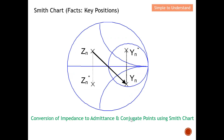Let's look at an impedance value — how can I obtain the admittance value? What I need to do is draw a line that crosses the point of origin (the matched point, which is 'one'), at exactly the same distance on both sides. The distance from the origin to the impedance point equals the distance from the origin to the admittance point. So this mirrored point is my admittance value. For example, to find the admittance of a given point, I draw a straight line across the origin at the same distance.